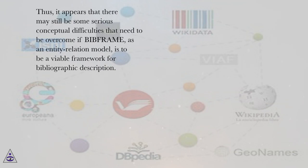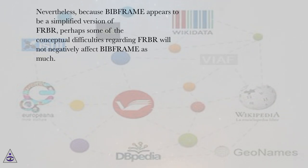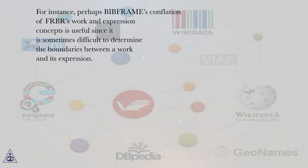Thus, it appears that there may still be some serious conceptual difficulties that need to be overcome if BIBFRAME, as an entity relation model, is to be a viable framework for bibliographic description. Nevertheless, because BIBFRAME appears to be a simplified version of FRBR, perhaps some of the conceptual difficulties regarding FRBR will not negatively affect BIBFRAME as much. For instance, perhaps BIBFRAME's conflation of FRBR's work and expression concepts is useful since it is sometimes difficult to determine the boundaries between a work and its expression.